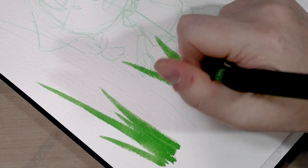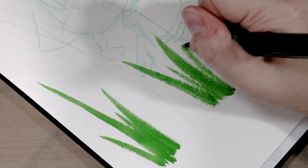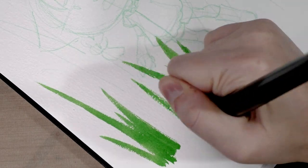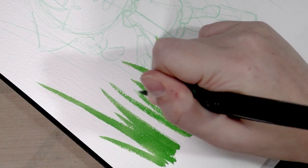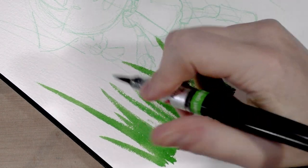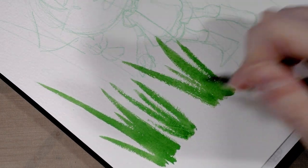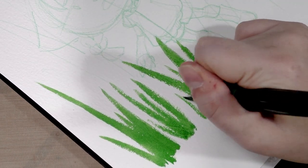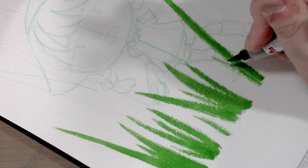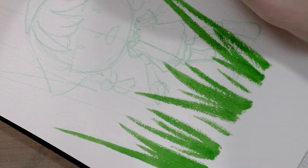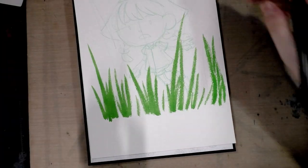So what we're doing with this illustration is we are drawing in our grass first. You may find, given the nature of this very absorbent paper, that you may get more dry brush than you want. That's okay, just squeeze the brush to get more ink out.